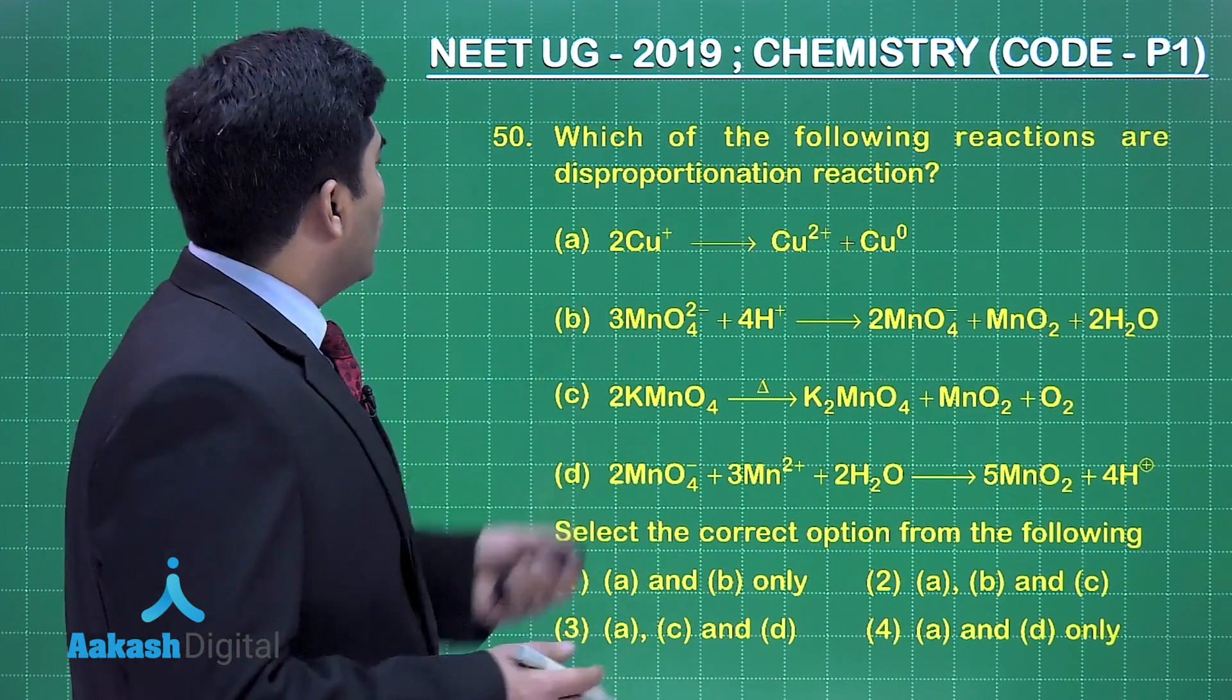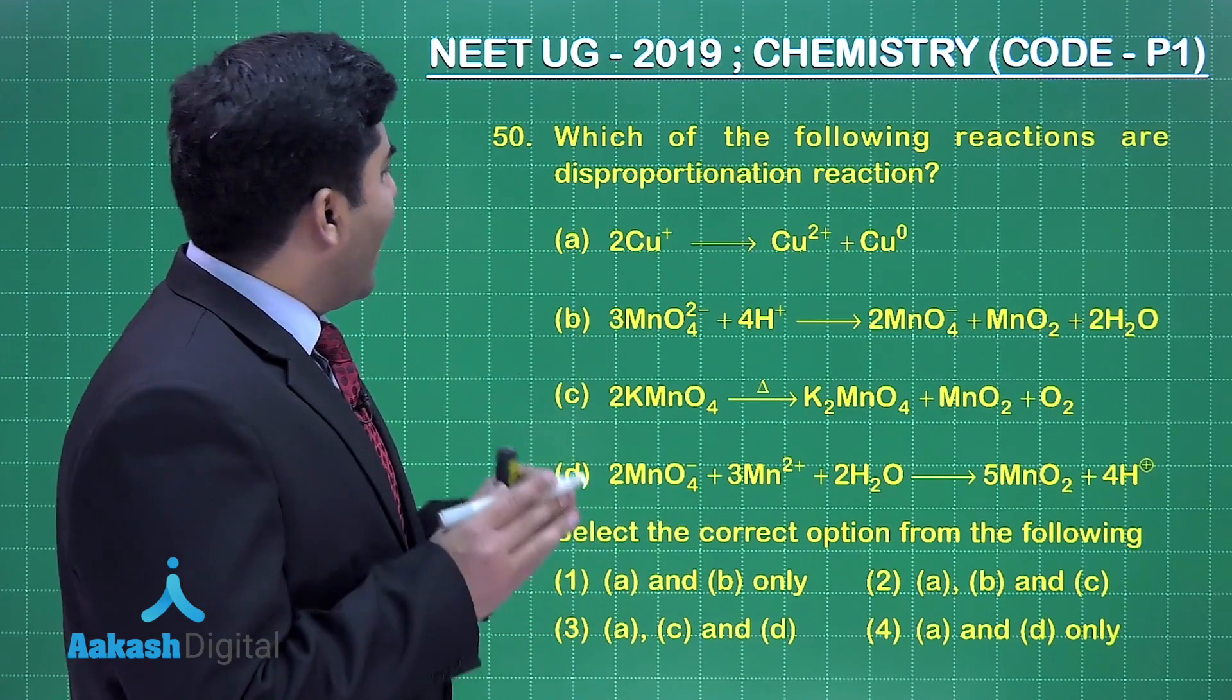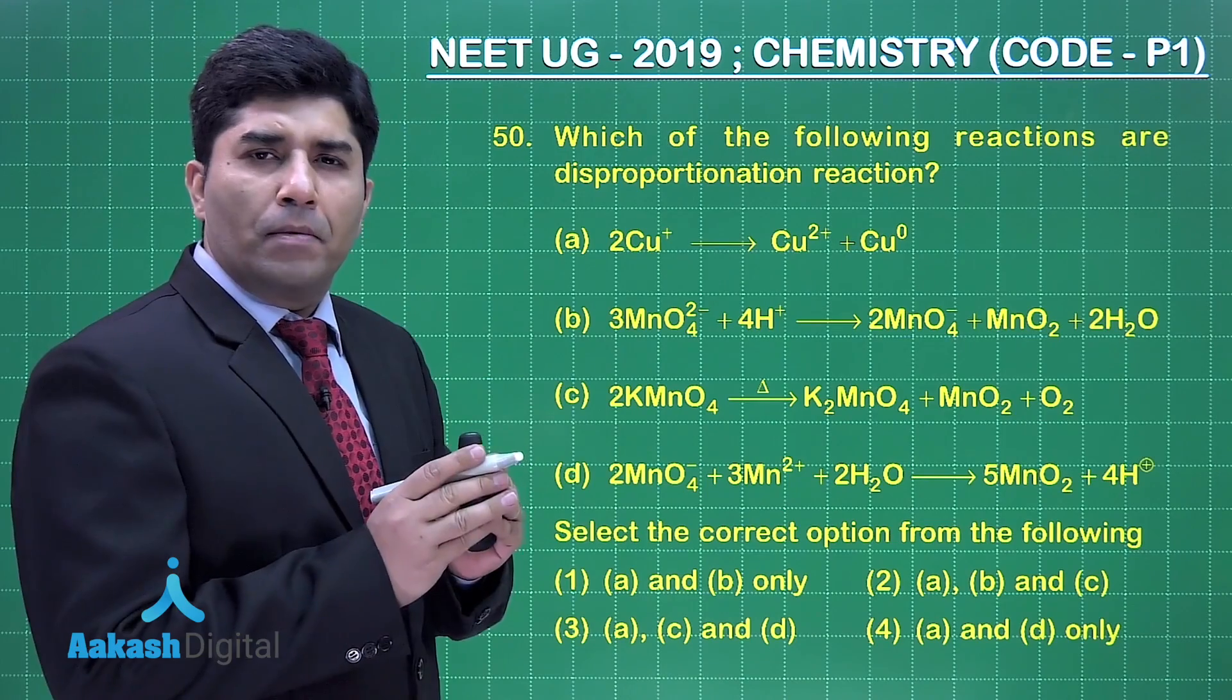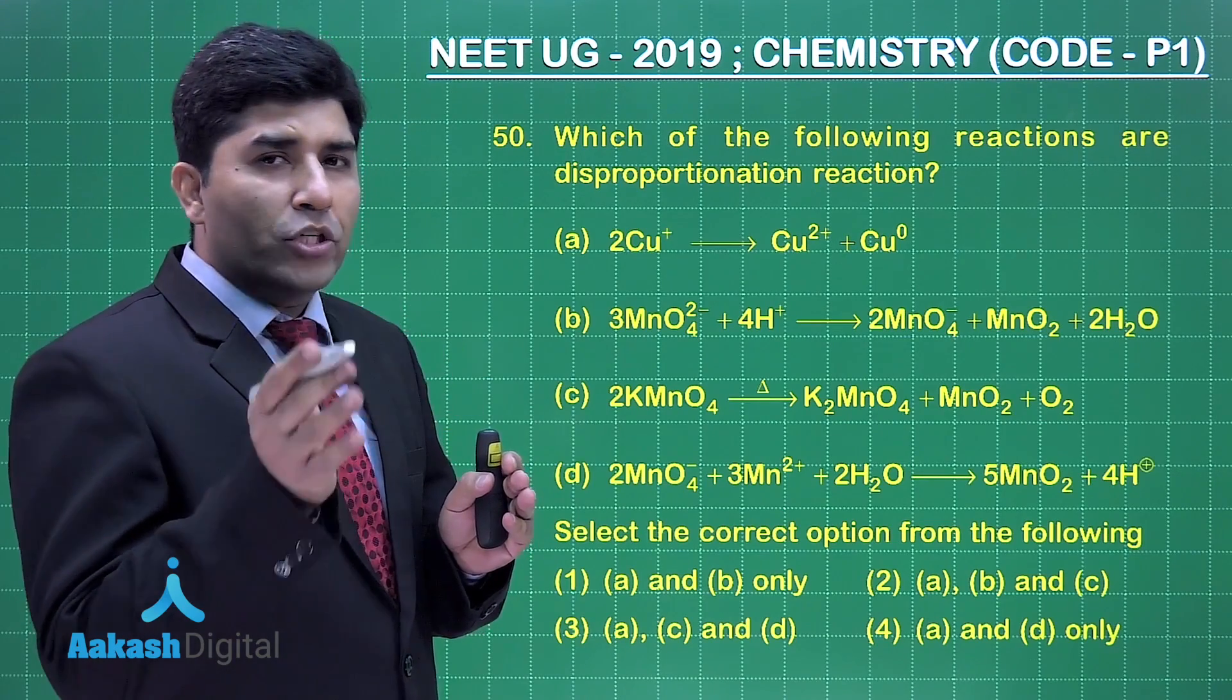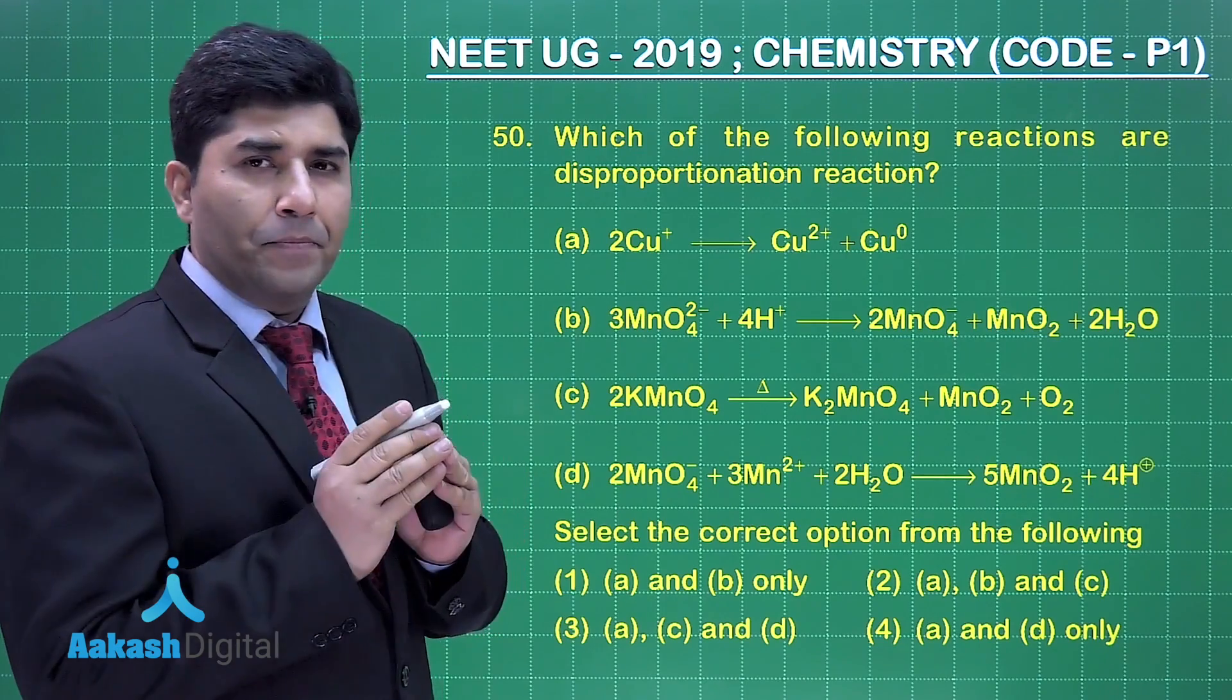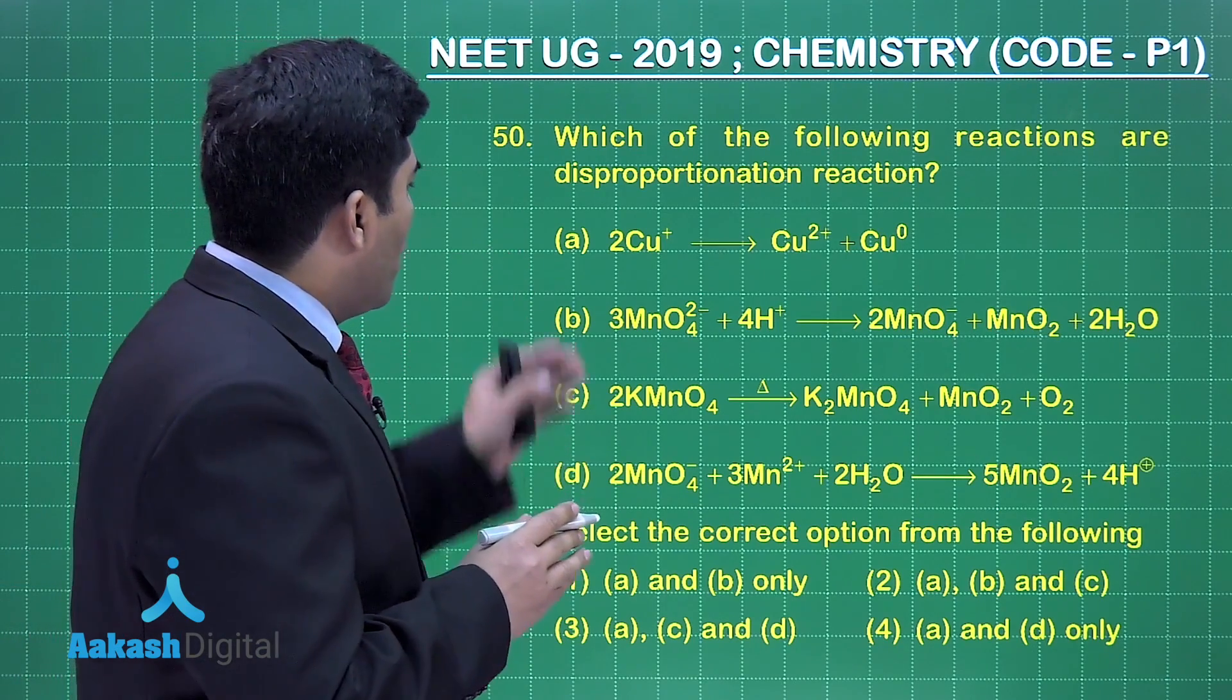So now in this question is asking which of the following reactions are disproportionation reaction. Now what is the meaning of disproportionation? It is the oxidation and reduction both simultaneously of a species. Now option number one: copper +1 is becoming copper +2 and 0.